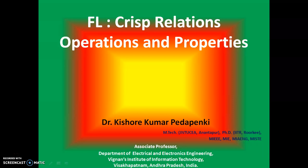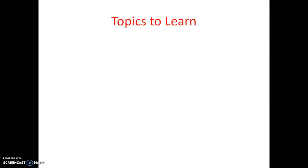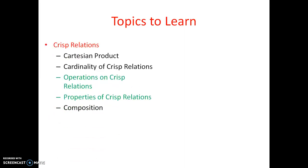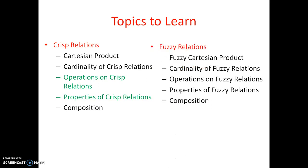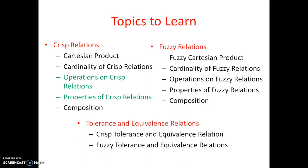These are the topics we have to learn under crisp relations. We have already covered cartesian product and cardinality of crisp relations. In this video we will cover operations on crisp relations and properties of crisp relations. In the next video we will cover composition, fuzzy relations, tolerance, and equivalence relations. In this video we will cover the green colored part: operations and properties of crisp relations.